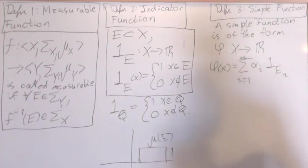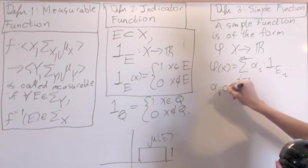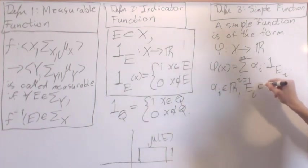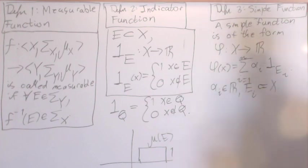And here we have alpha i is an element of the real numbers. And ei is a subset of x. And right here is ei of x.